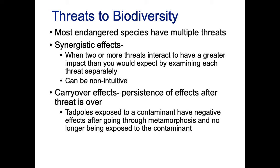A second type of interaction is called a carryover effect — this is the persistence of effects after the threat is over. For example, when a tadpole is exposed to a contaminant and then goes through metamorphosis to become a frog, it leaves the pond and is no longer exposed to the contaminant, but it still doesn't survive as well as frogs from ponds without the contaminant. That's a carryover effect — they're still negatively affected even though the contaminant is no longer interacting with them.